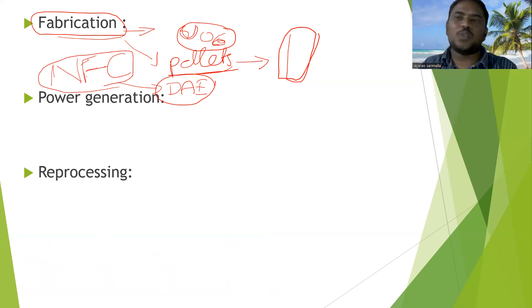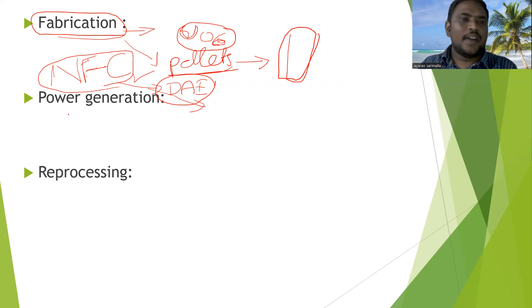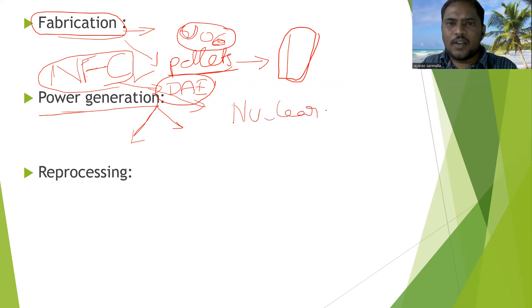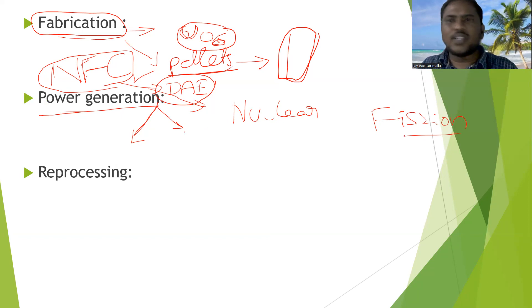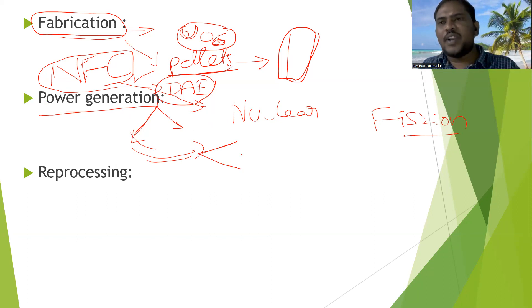This fabrication is done at the NFC — Nuclear Fuel Complex. NFC is an important location for exam questions. After fabrication, the fuel rods undergo nuclear fission reactions inside the reactor, which automatically leads to power generation.